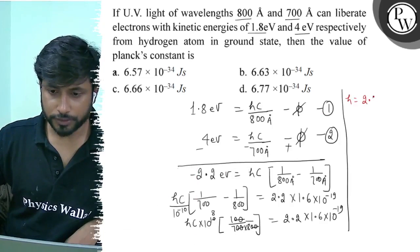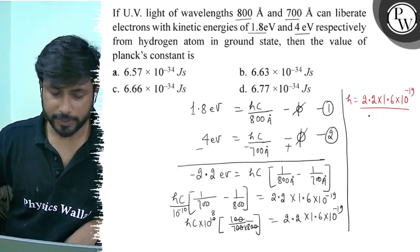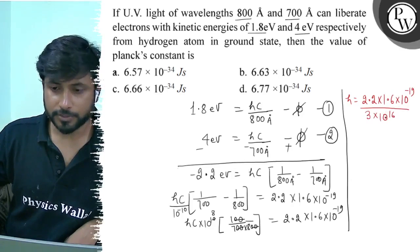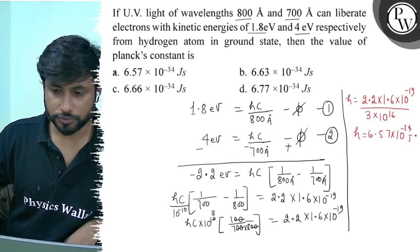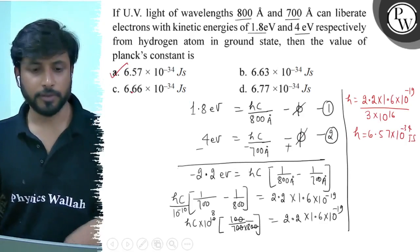So h equals 2.2 into 1.6 into 10 to the power minus 19 divided by c, which gives h on the order of 10 to the power minus 34 joule seconds. The final answer is Option A. Best of luck.